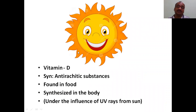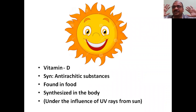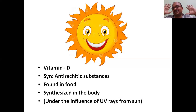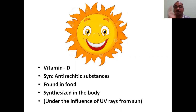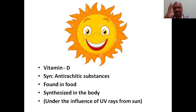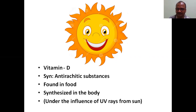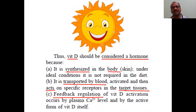The sun is the source of vitamin D. Sun will not give directly vitamin D to your skin — don't get confused. Sun gives UV rays, and those UV rays will convert the precursor. Vitamin D is found in food and is also synthesized in the body under the influence of UV rays from the sun.